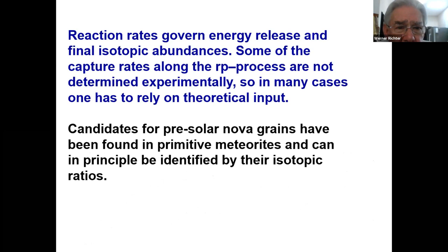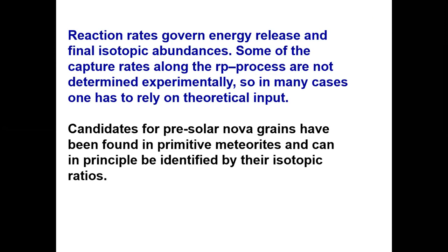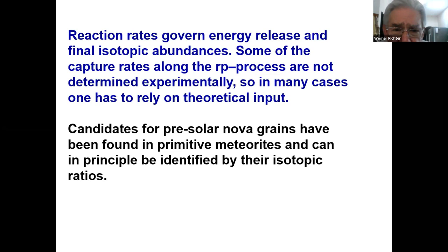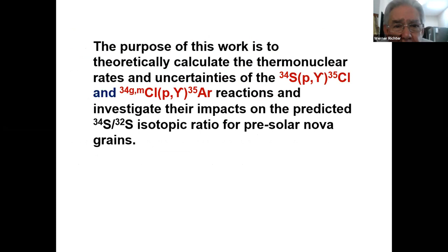It's difficult to do measurements for many of these reactions. So in many cases — and that's what we will do to a large extent in this particular project — we rely on theoretical input. Candidates for pre-solar NOVA grains have been found in primitive meteorites and can be identified in principle by isotopic ratios. We will be focusing mainly on the sulfur-34 to sulfur-32 ratio.